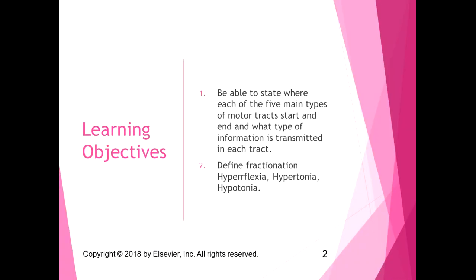For the learning objectives, I want you to be able to state where each of the five main types of motor tracks start and end and what type of information is transmitted in each track. Similar to what we did with the somatosensory system, you don't need to know every detail about each track, just where they start and end and what type of information is transmitted. The really nice thing about the motor tracks is their names tell you exactly where they start and end — corticospinal means from the cortex to the spine, easy.